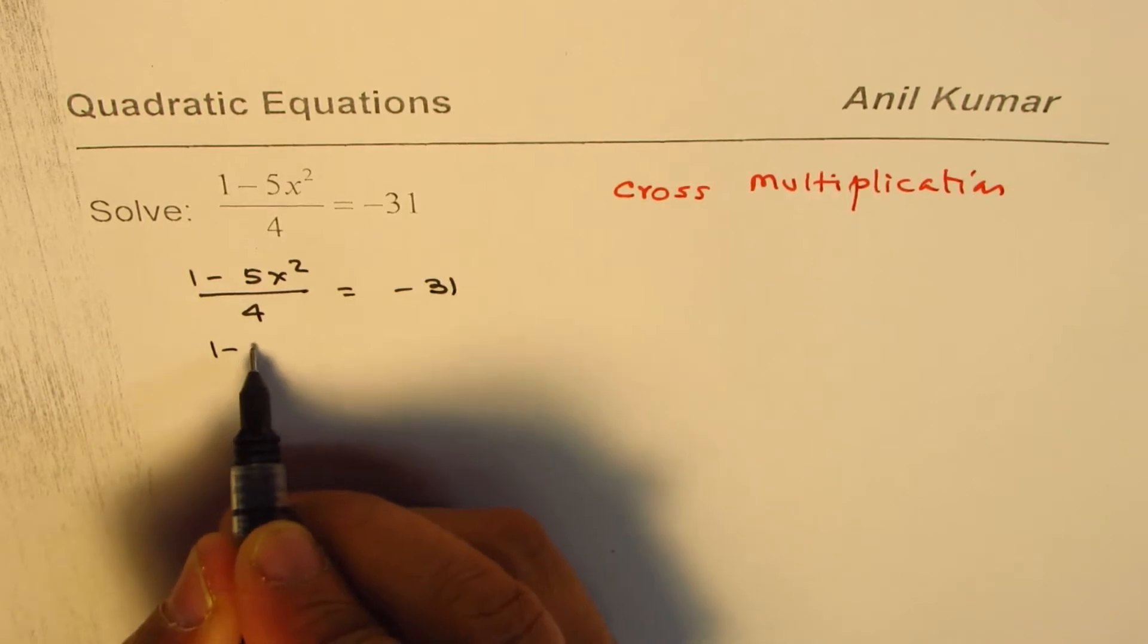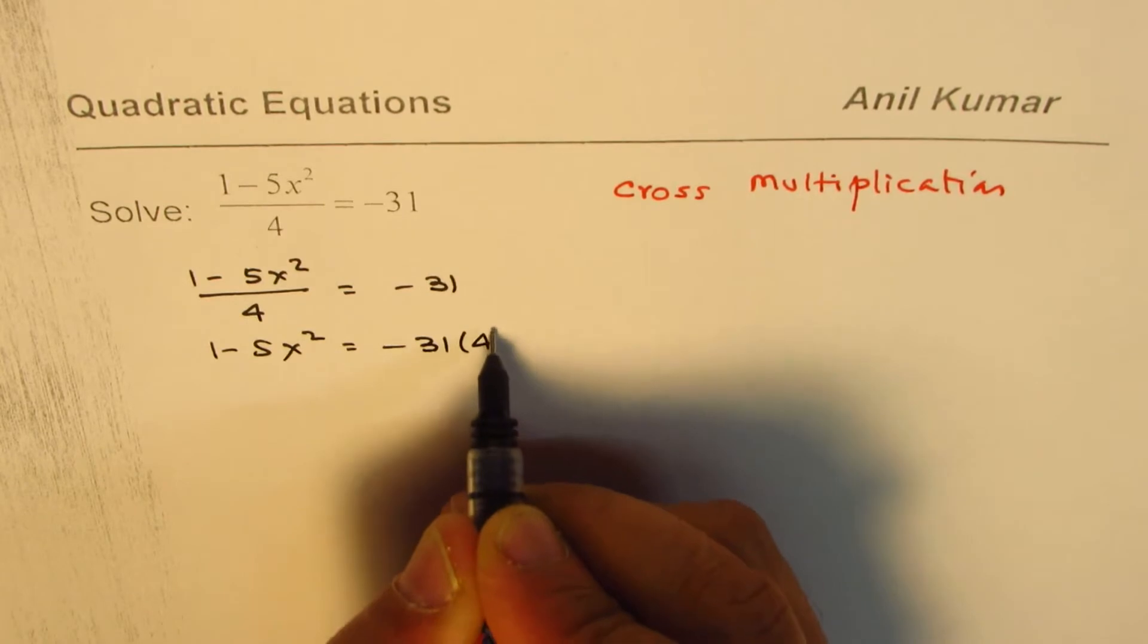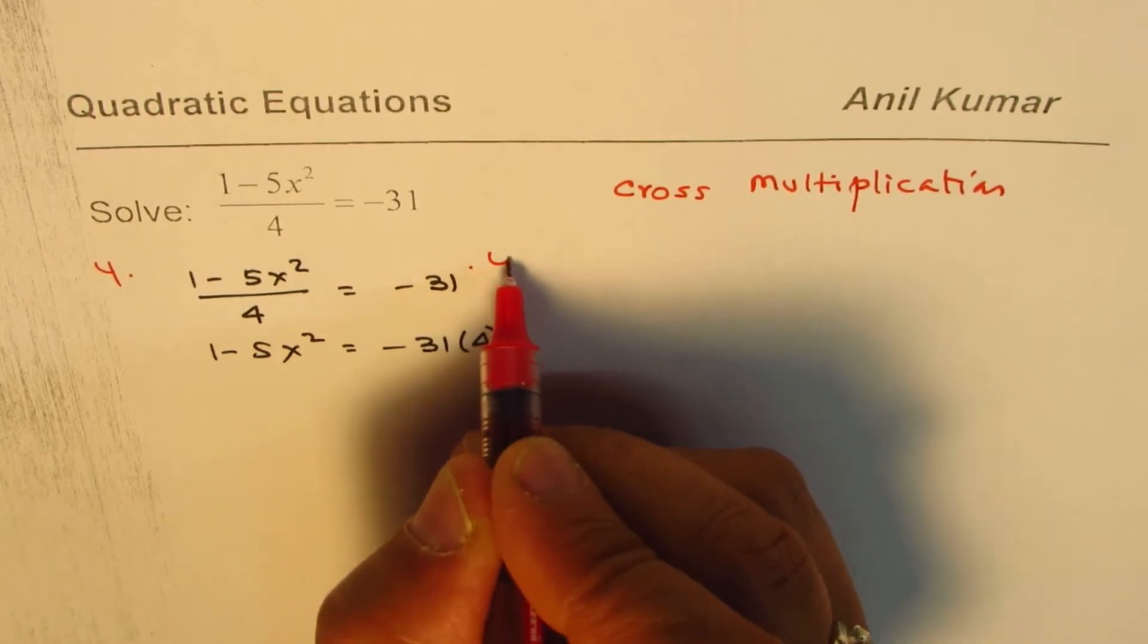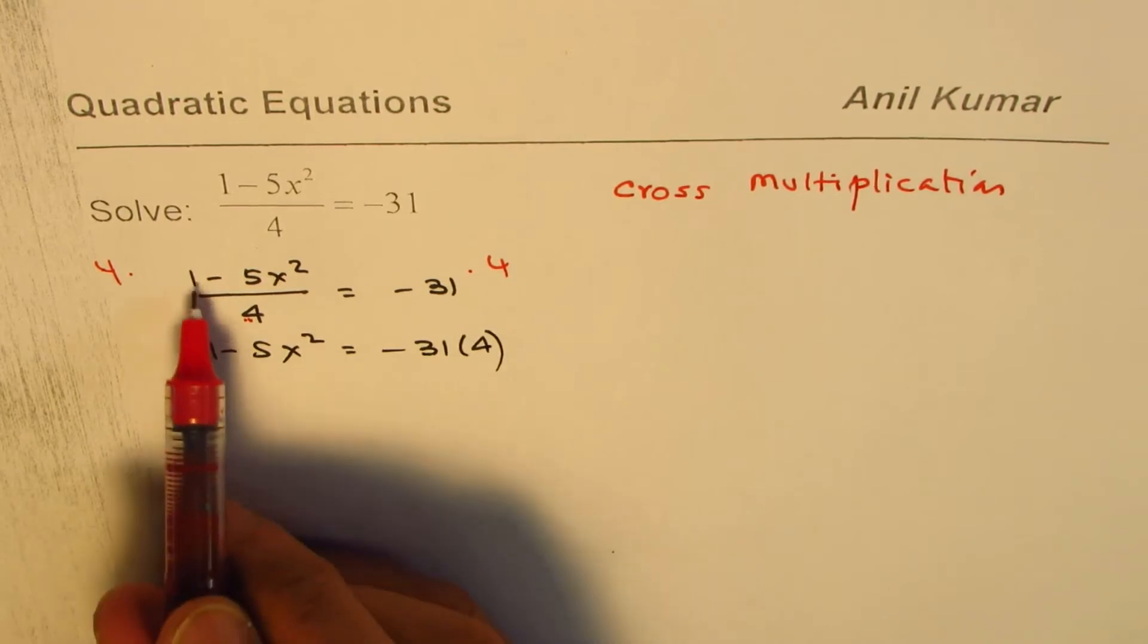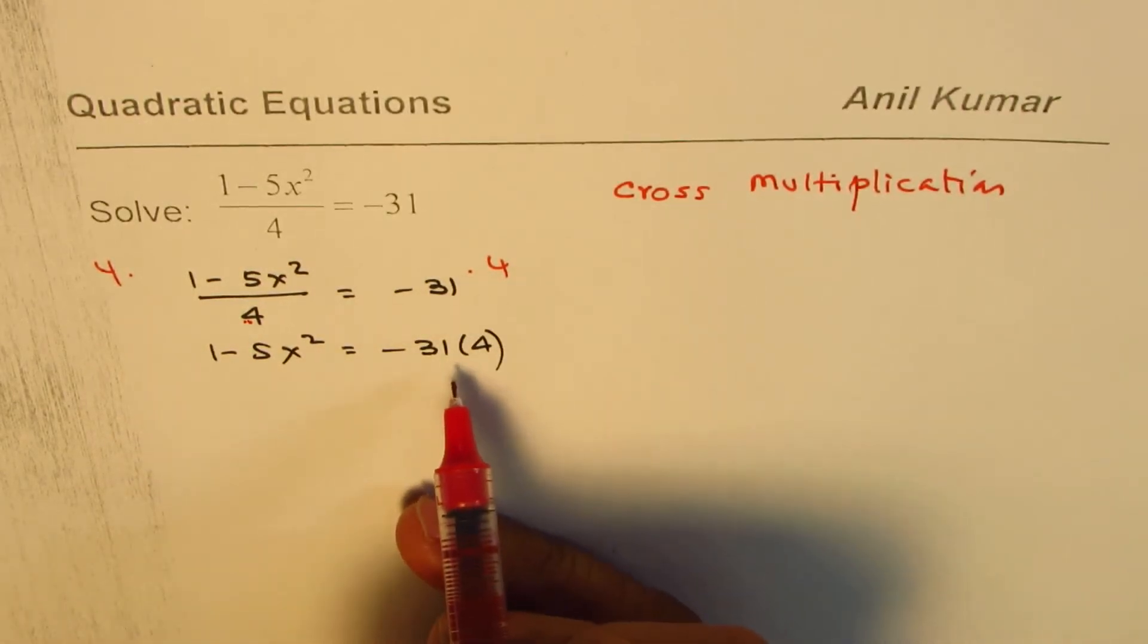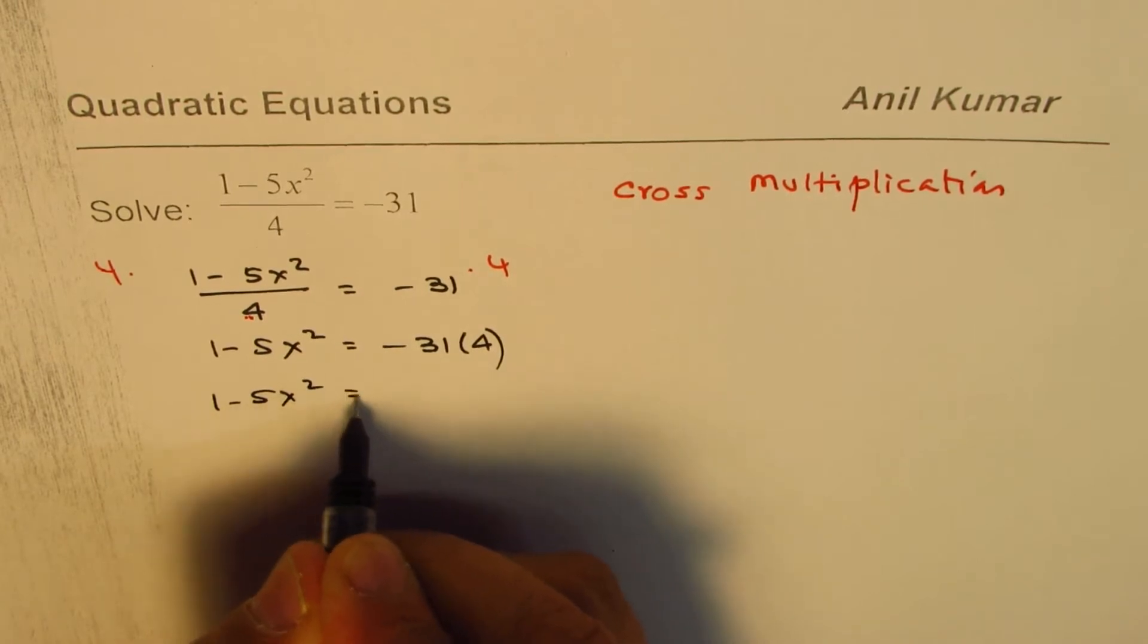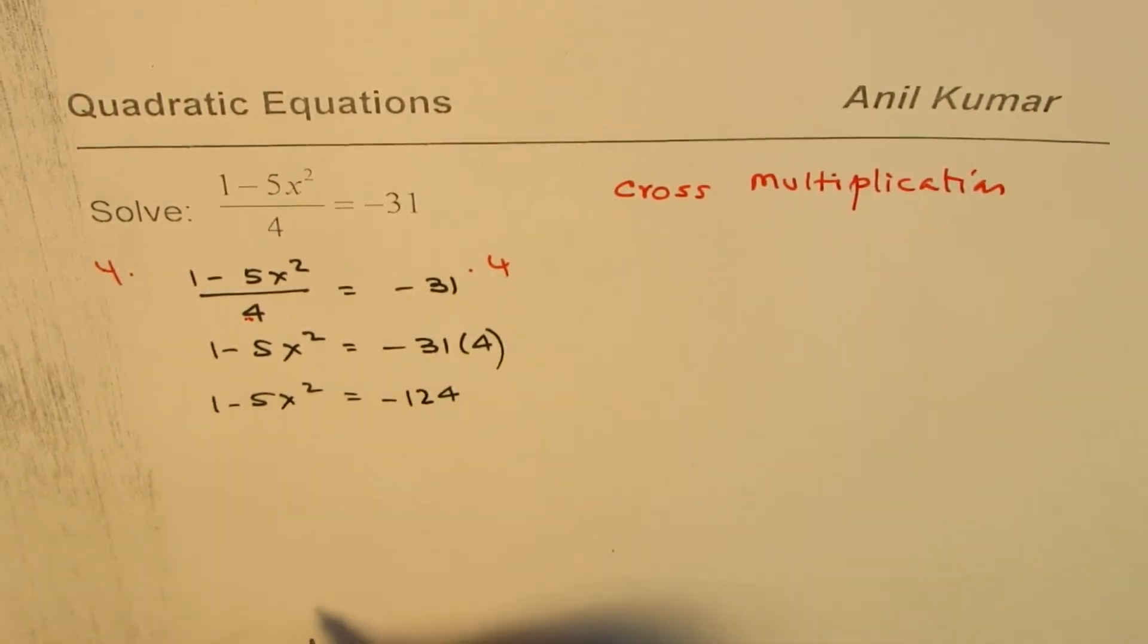We are left with 1 minus 5x squared equals minus 31 times 4. Effectively, we are multiplying both sides by 4. This 4 and this 4 cancels. So you get 1 minus 5x squared here and that gets multiplied. I hope this step is clear. Now I just simplified. So we have 1 minus 5x squared equals 4 times this which is minus 124.